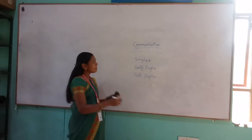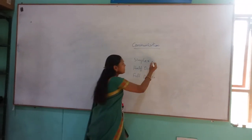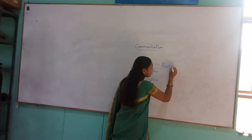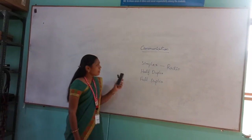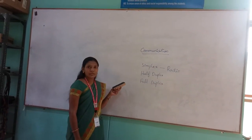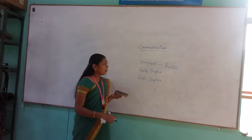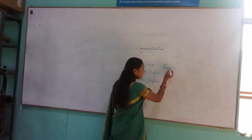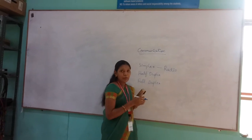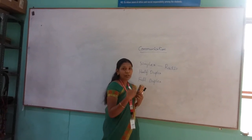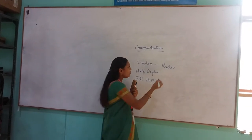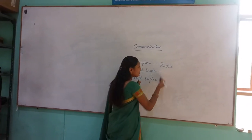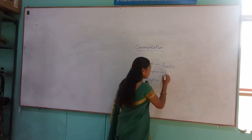So in simplex, the best example is nothing but a radio. In radio we can just hear — whatever we are getting from radio we can hear, but we can't respond to that and we can't give an answer to that. So then it becomes a simplex. In half duplex I can give an example like walkie talkie.